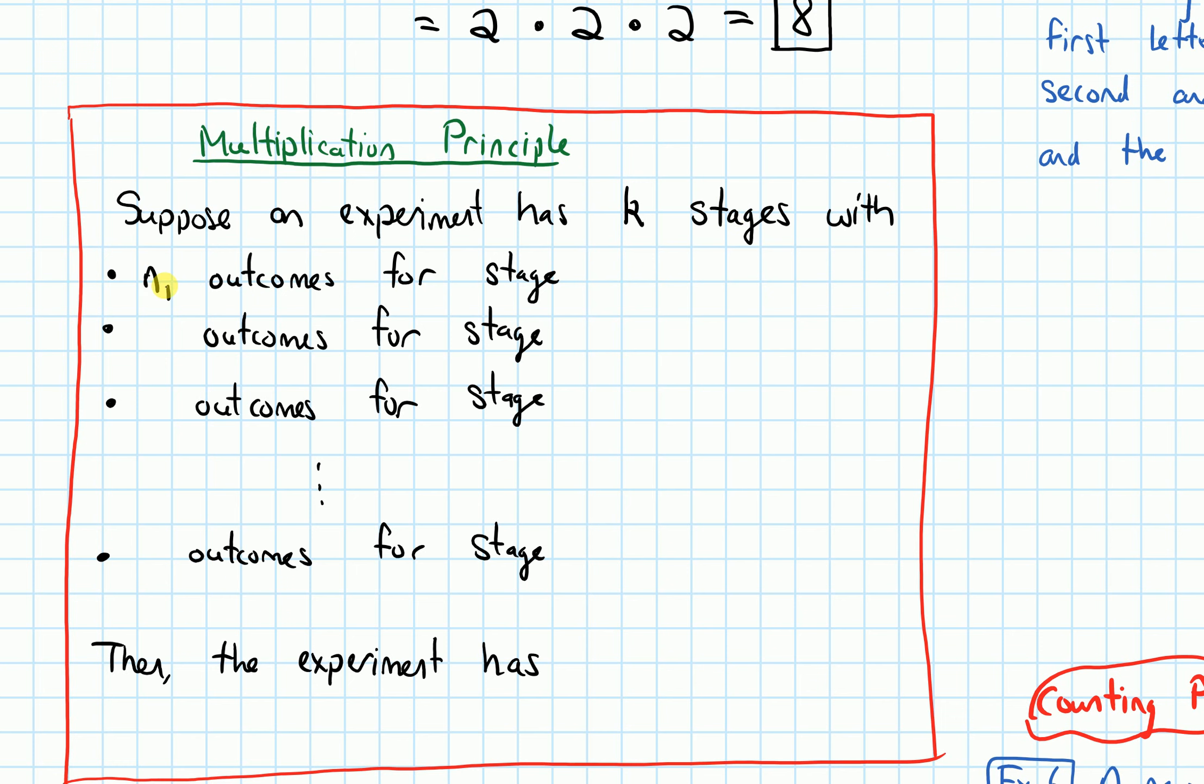And it says that suppose we have an experiment with k stages or k steps with n1 outcomes for stage one. Whatever the first step in the experiment is, n1 represents how many outcomes for it that we have. So maybe n1 is like three if there's three outcomes in stage one, or it's two if there's two outcomes for stage one.